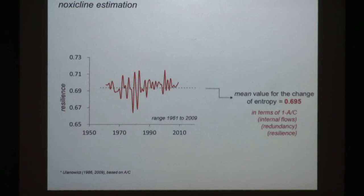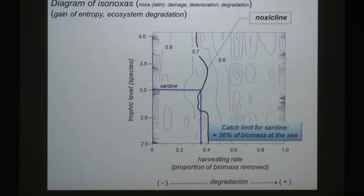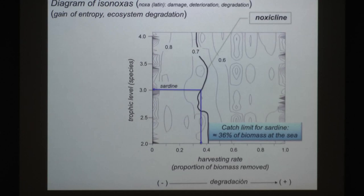For example, for the sardine, we can identify the trophic level to move to the noxiclina, and then identify the harvesting rate we must apply to maintain order in the ecosystem. We are moving from the property of the ecosystem to define limits of fishing for the stocks.